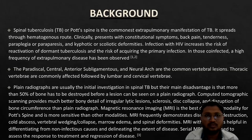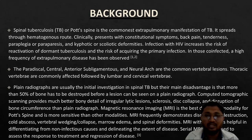Spinal tuberculosis, or Pott's spine, is the commonest extra-pulmonary manifestation of tuberculosis. It spreads through the hematogenous route. Clinically, the symptoms are back pain, tenderness, paraplegia or paraparesis, and kyphotic or scoliotic deformity. Infection with HIV increases the risk of reactivation of dormant tuberculosis and the risk of acquiring primary infection. In those co-infected, a high frequency of extra-pulmonary disease has been observed.